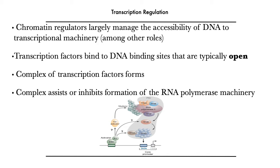What then typically happens is that some transcription factors come in to bind to DNA binding sites that are either at distal enhancers or at proximal promoters. Transcription factors typically bind to open or accessible DNA sequence. After transcription factors bind and help recruit the basal transcriptional machinery, you basically get a complex of transcription factors forming, which then eventually recruit RNA polymerase and enable transcription to happen.